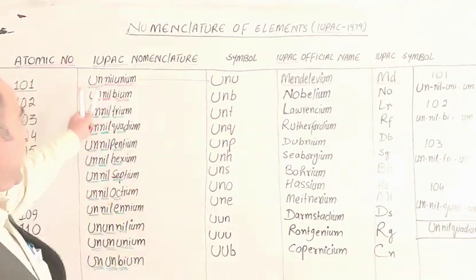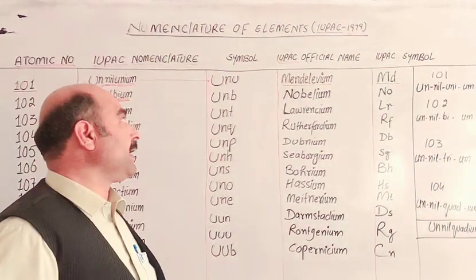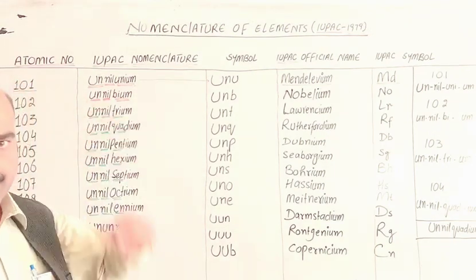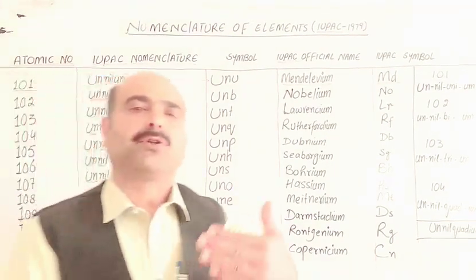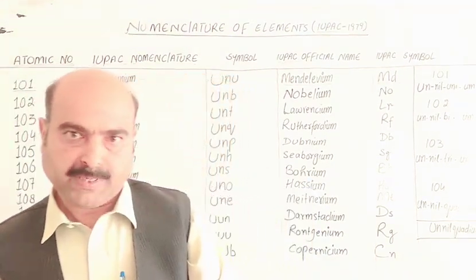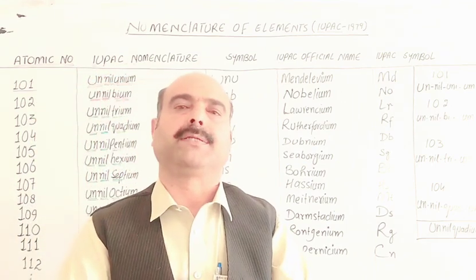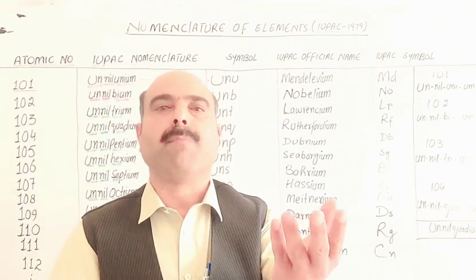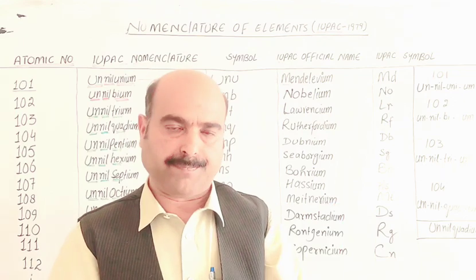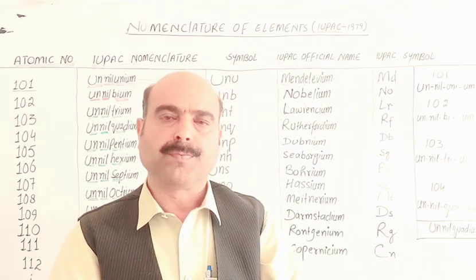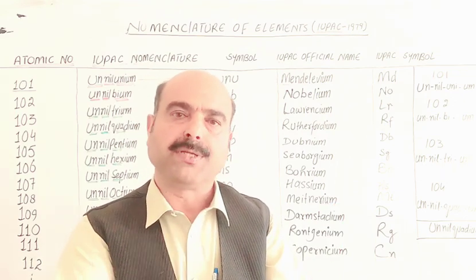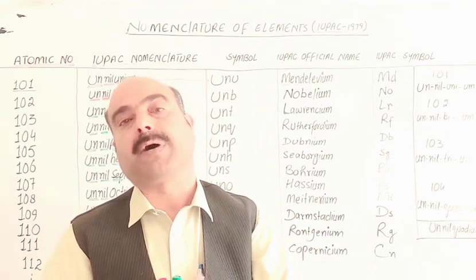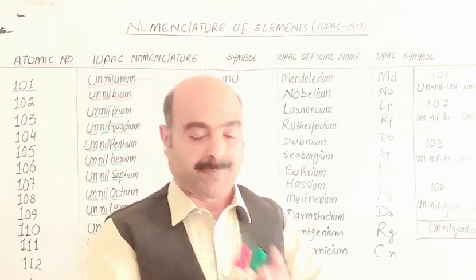It is very simple. We use different prefixes — Greek, Latin, and German. The prefixes are: un means one, bi means two, nil means zero, tri means three, tetra means four, penta means five, hexa means six. These are the prefixes used to build systematic element names.